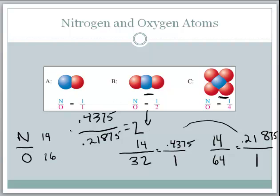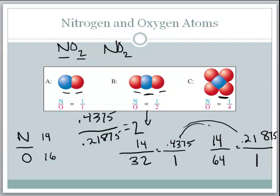This shows evidence that atoms exist in whole number ratios when they form compounds. The law of definite proportions says every NO₂ molecule will have the same mass ratio of nitrogen to oxygen — that should make sense, since each atom has a specific mass. The law of multiple proportions says: find the mass of one element relative to one gram of the other in two different compounds, take the ratio of those two values, and you'll always get a whole number, showing that atoms combine in whole number ratios.